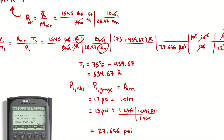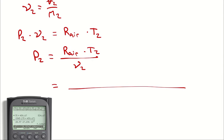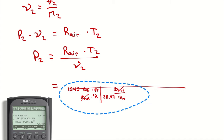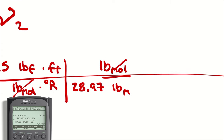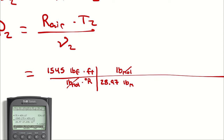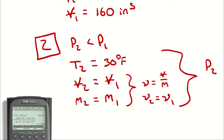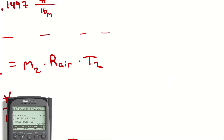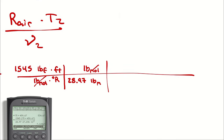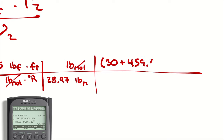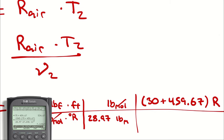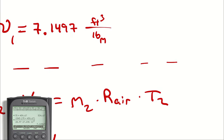For R_air I grab the same quantities as earlier. I'm multiplying by T2, which is given as 30 degrees Fahrenheit — but I'm not plugging in 30. I'm plugging in 30 plus 459.67 rankine. Then I'm dividing by that specific volume we just calculated, which was 7.1497 cubic feet per pound-mass.